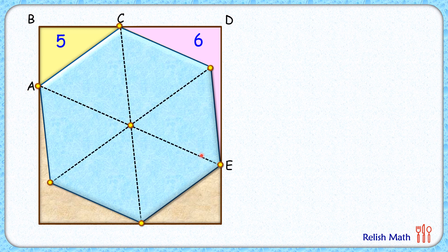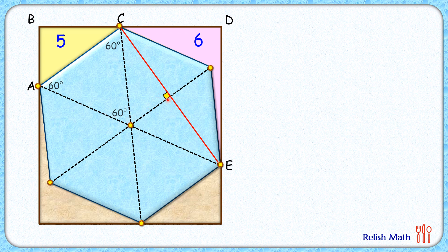Let's start by drawing the main diagonals of the hexagon, which divide the hexagon into 6 congruent equilateral triangles. Let's join CE, which is an altitude with respect to the equilateral triangle, so this angle will be 90 degrees. If we assume the length AC as x, that is the side length of the equilateral triangle, then the height is (√3·x)/2 and the full length CE becomes √3·x. The altitude also divides the equilateral triangle into congruent figures.